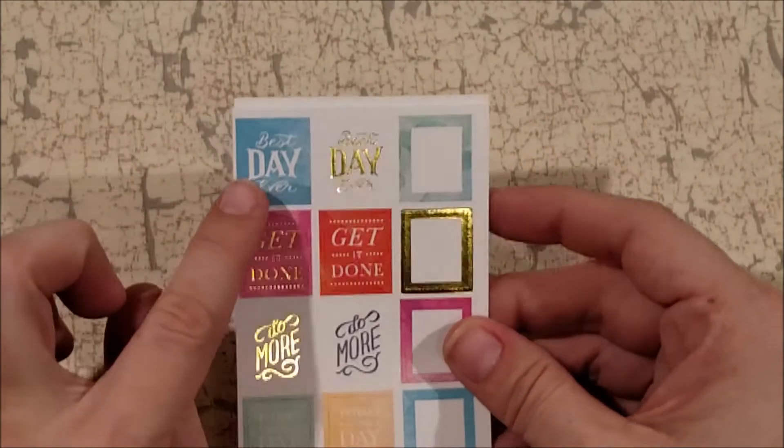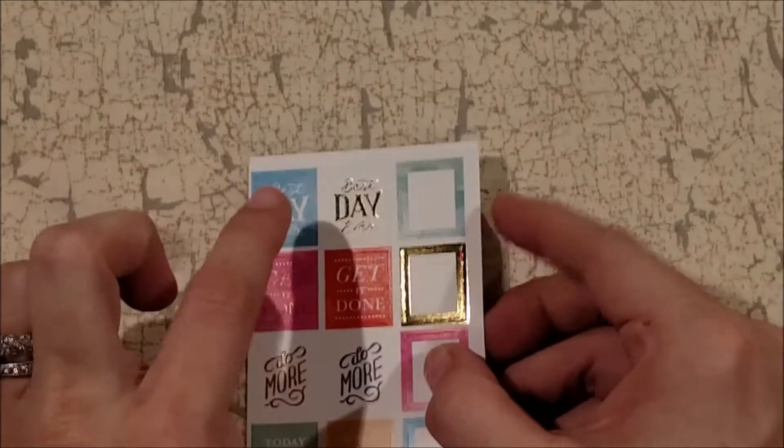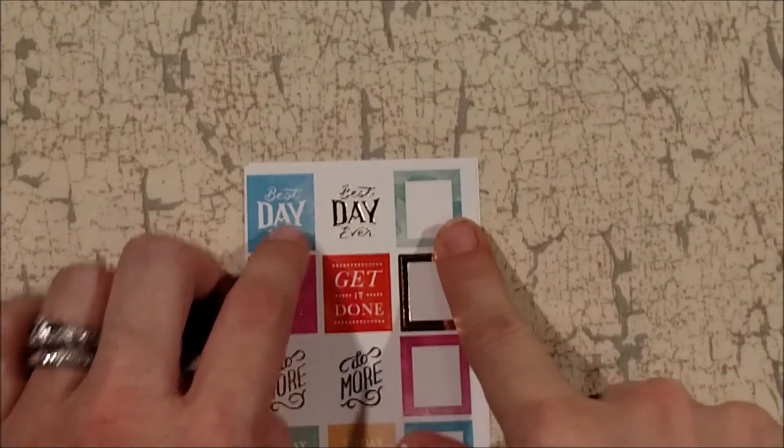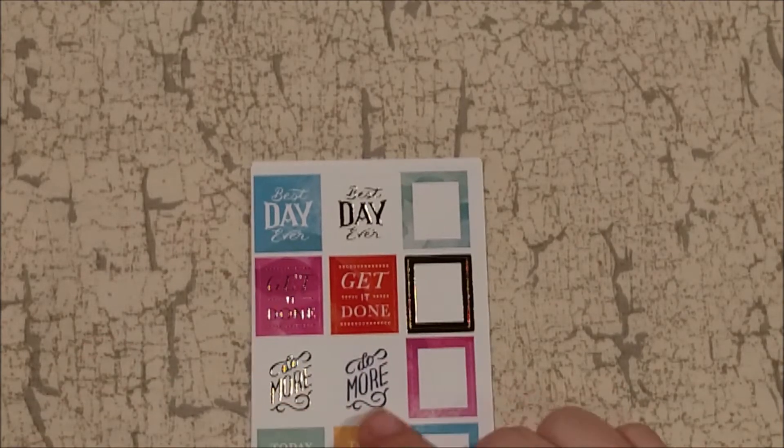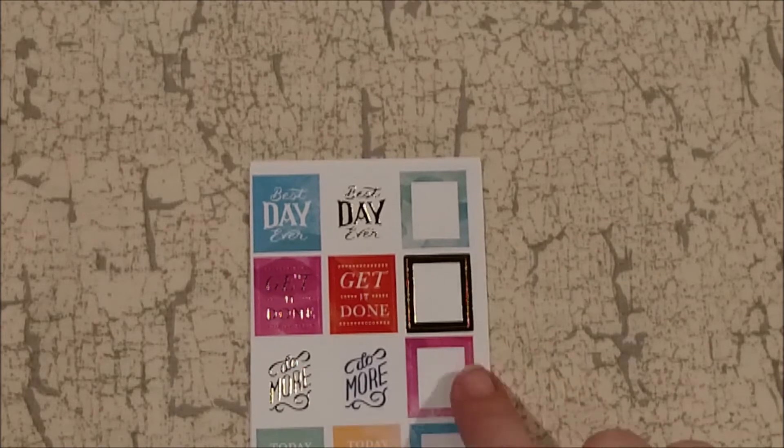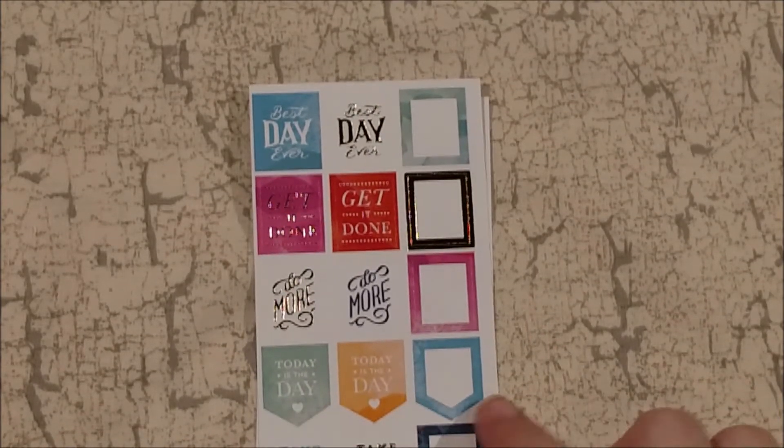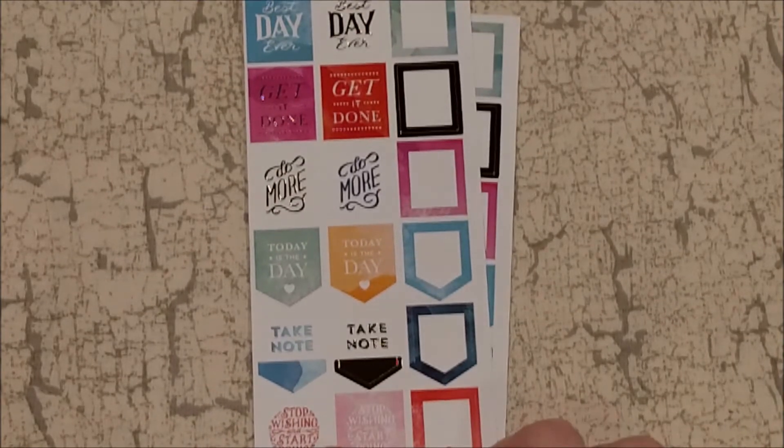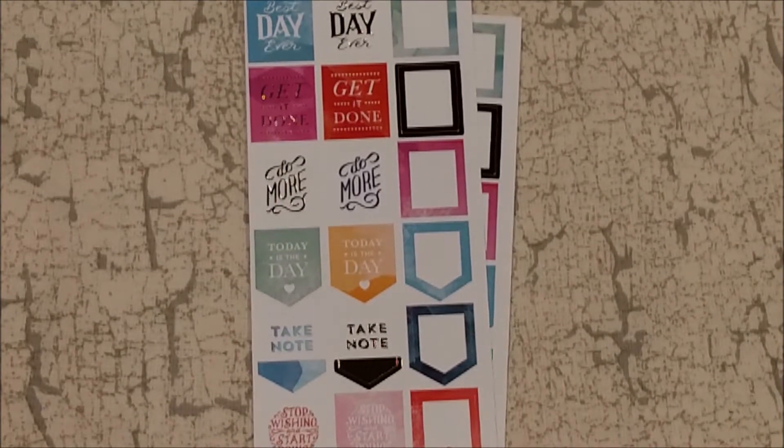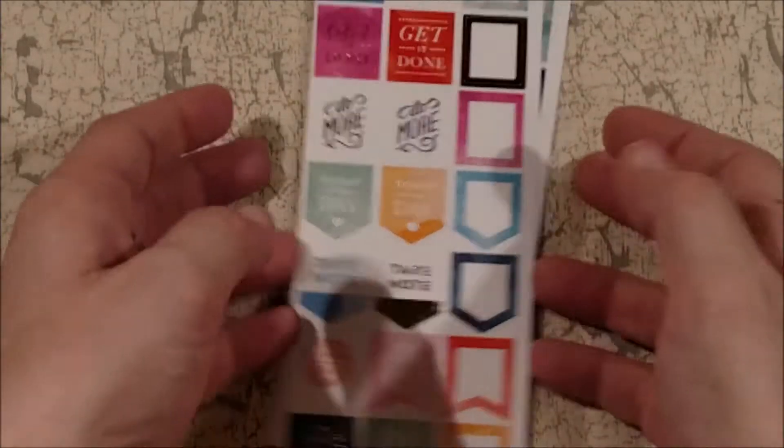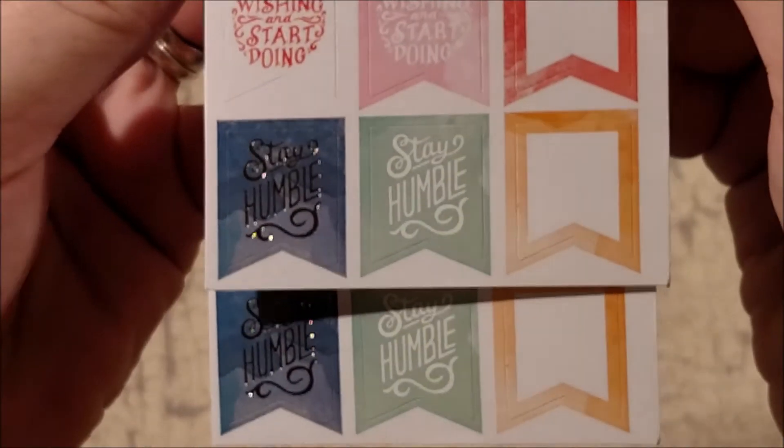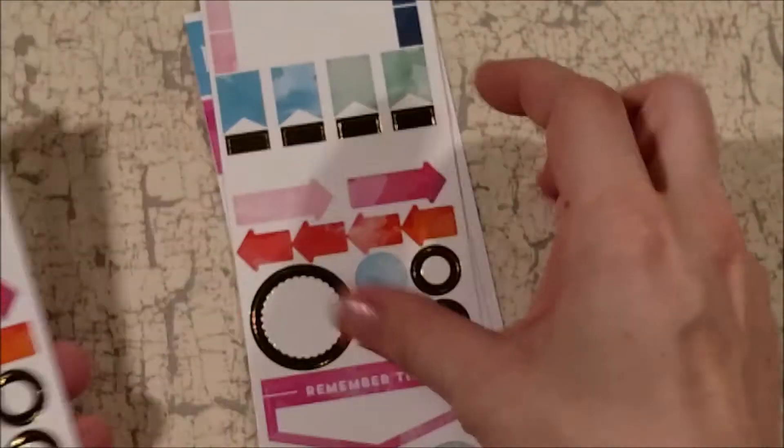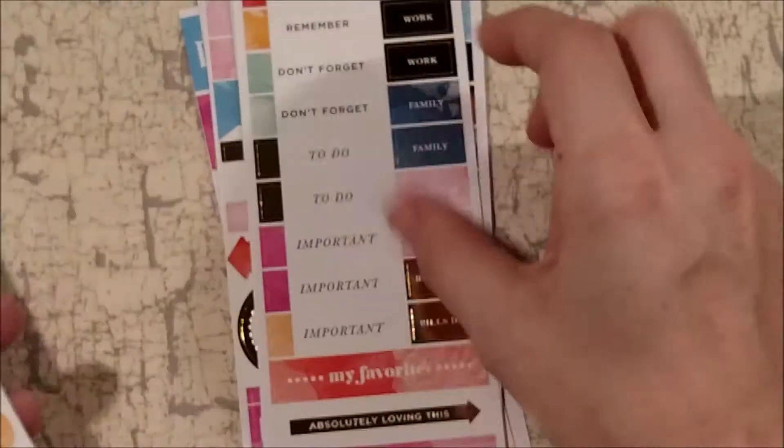And then this sheet here just says 'best day ever' in this blue watercolor and then the foiling. And then you get a blank square and then this one says 'get it done' and gold foiling and then that orangey red and a blank square. 'Do more' and foil and non-foil and a blank square with pink. 'Today is the day,' 'take note,' 'stop wishing and start doing,' and then 'stay humble.' And you get two sheets of those. So those are really cute. So I really like that, I felt like that was a lot of stickers for the price. I really like the icons, I don't have a ton of icons that are just not with kits so I wanted to get those.